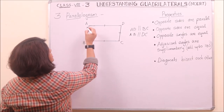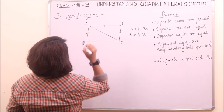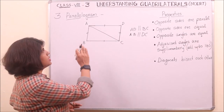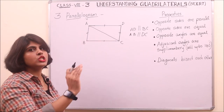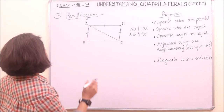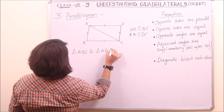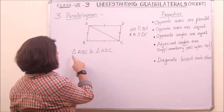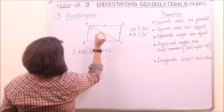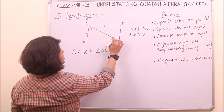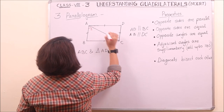If we consider two non-adjacent vertices, we can form a diagonal. AC is one of the diagonals of quadrilateral ABCD, and this diagonal AC divides the quadrilateral into two triangles — triangle ABC and triangle ADC. Considering triangle ABC, we label its two interior angles as angle 1 and angle 2, and the two interior angles of triangle ADC as angle 3 and angle 4.